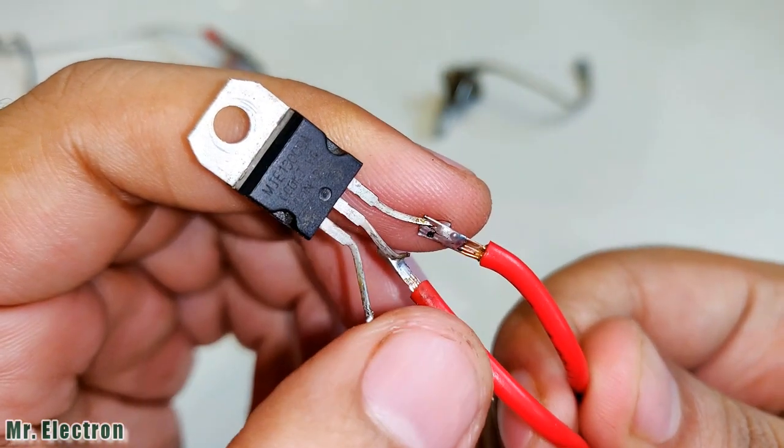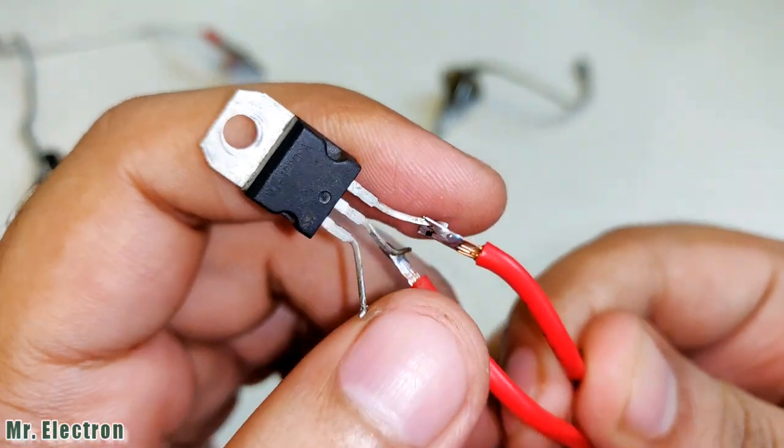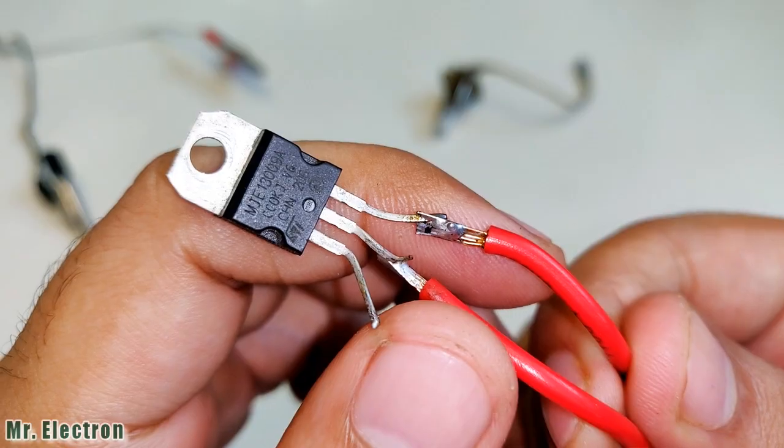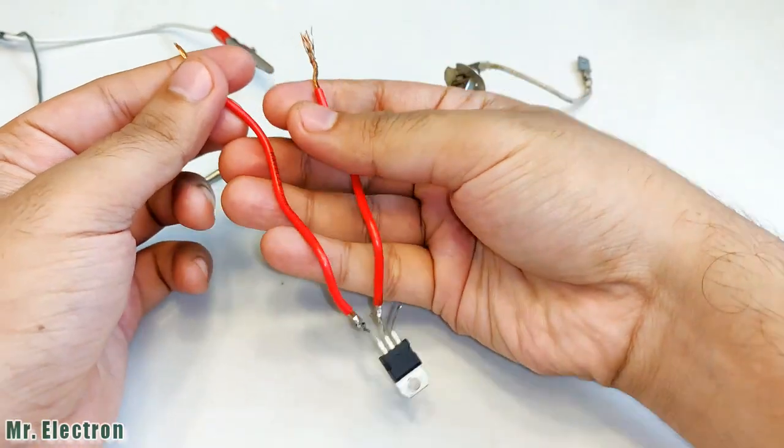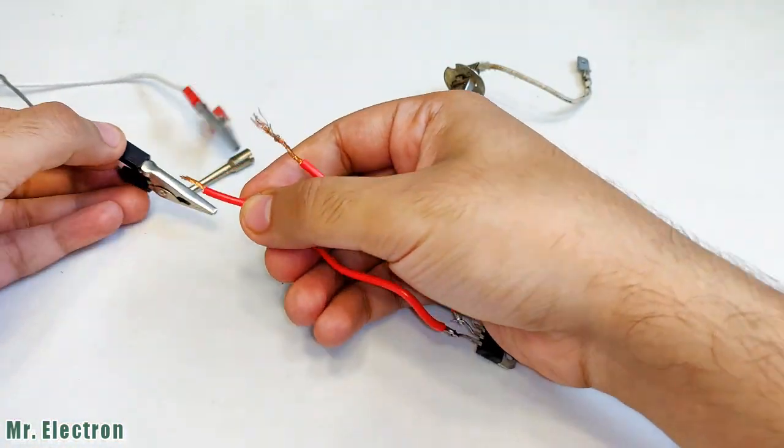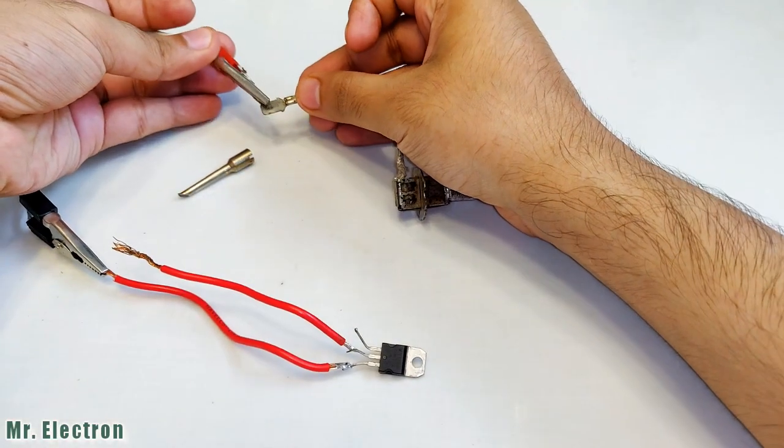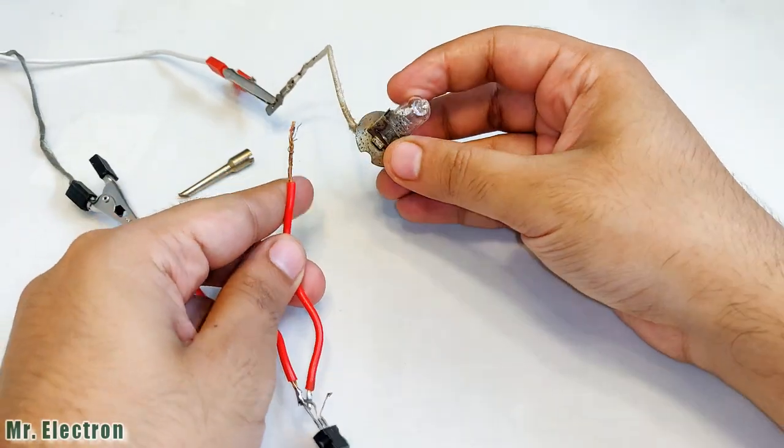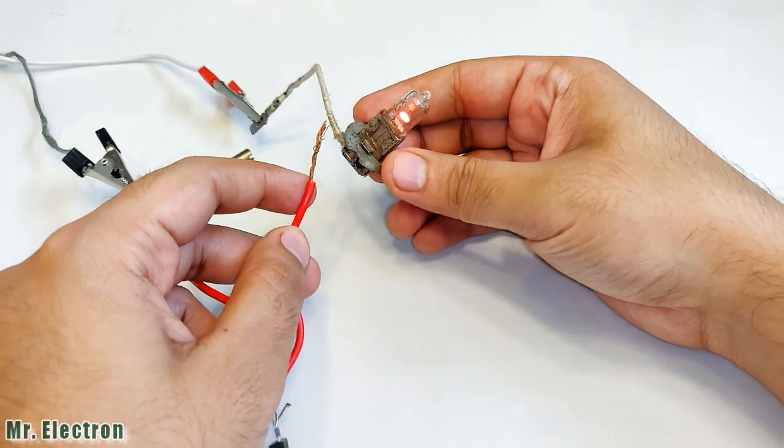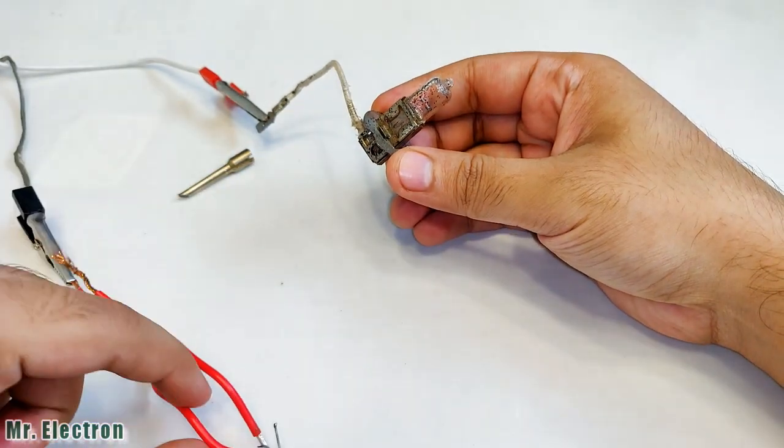The emitter will be connected to the negative of the supply, and one terminal to the bulb. You see it's lighting up. This indicates that even though I have not given any supply to the base, which is necessary for powering the transistor, it is still conducting.